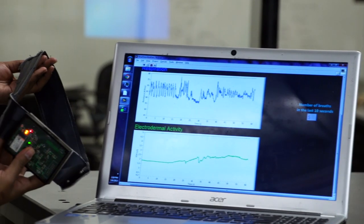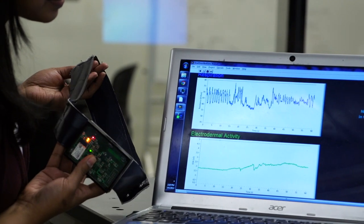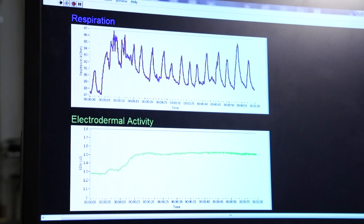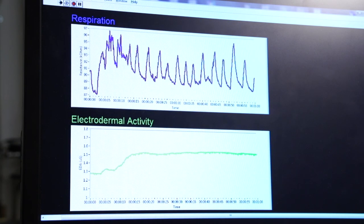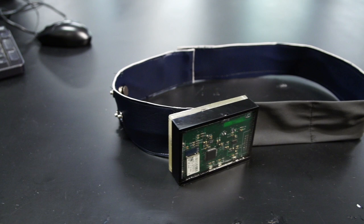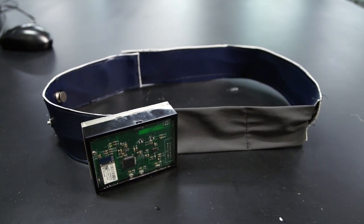All the data is sent via Bluetooth to an external computer or smartphone, so the parent can receive an alert to see if the patient is actually having a seizure and come assist the patient.